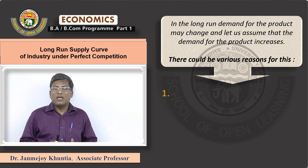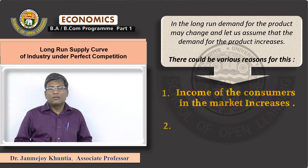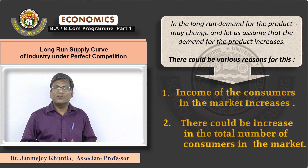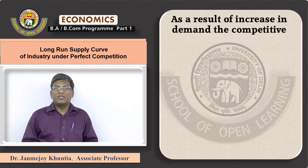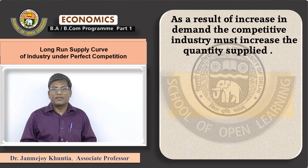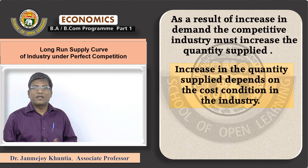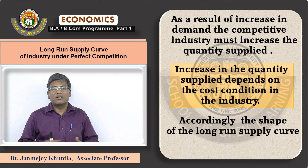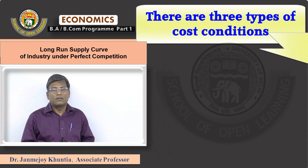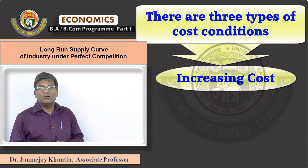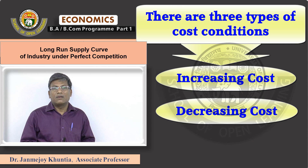Reason one: income of consumers in the market increases. Reason two: there could be an increase in the number of consumers in the market. As a result of this increase in demand, the competitive industry must increase the quantity supplied. Increasing quantity supplied depends on the cost conditions in the industry, and accordingly the shape of the long-run supply curve can be determined. There are three types of cost conditions: number one, increasing costs; number two, decreasing cost conditions; and number three, constant cost conditions.